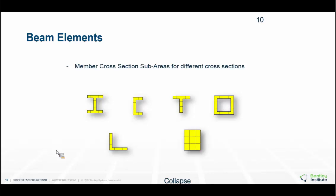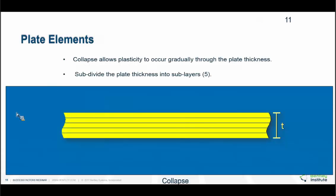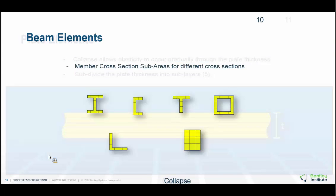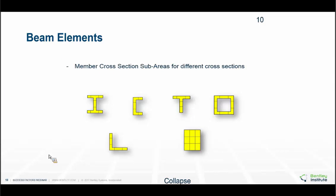The cross-section is subdivided, and the length of the member is also divided, so the hinge can form anywhere along the length. One question from a participant: is it 20 sub-elements for any length member? Yes, it is. The default is 8, and the user has the option to set it from 1 to 20. We found that setting it to 8 gives you good results while optimizing your run time.